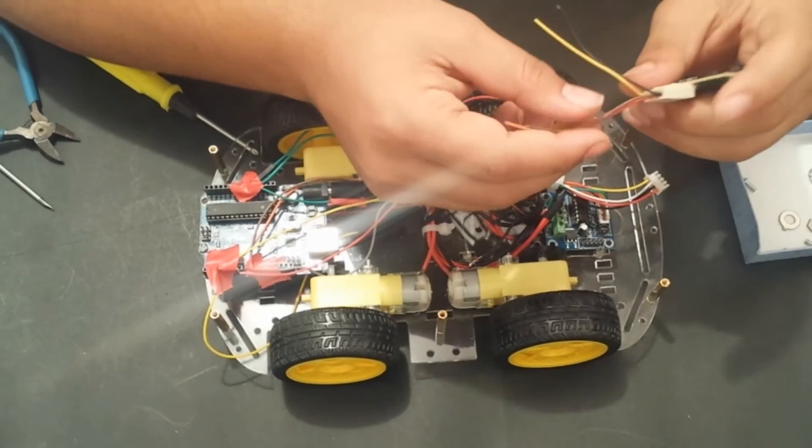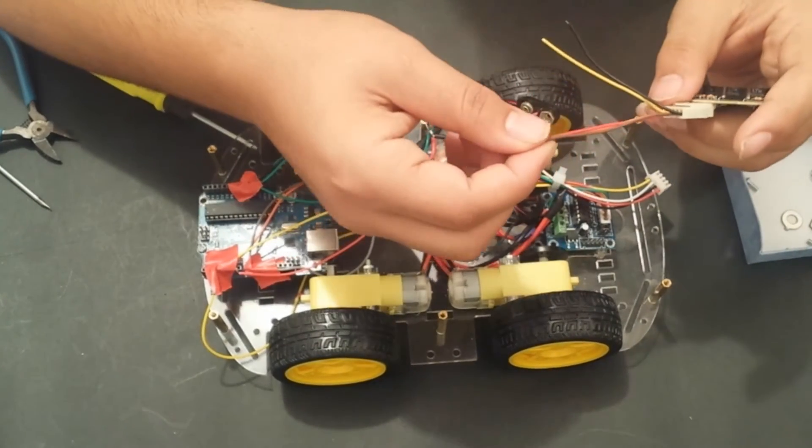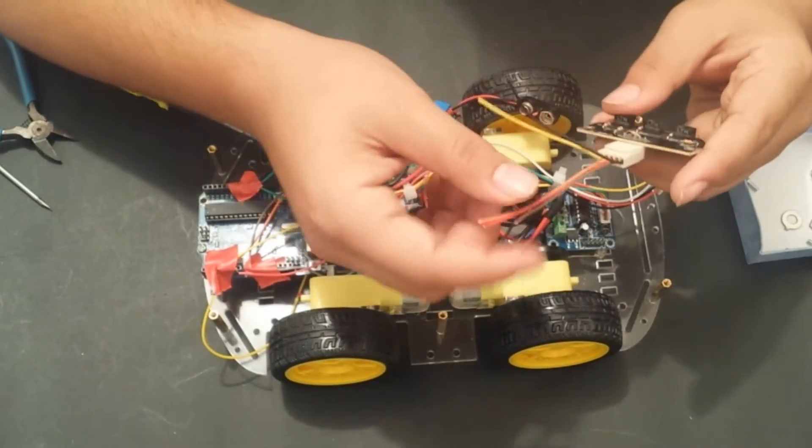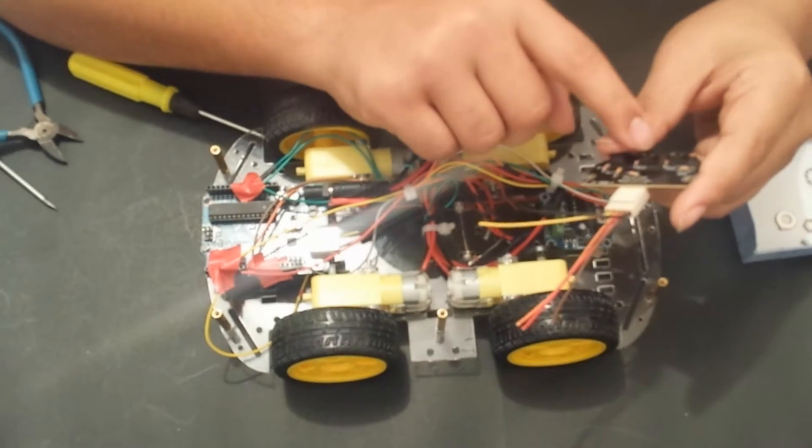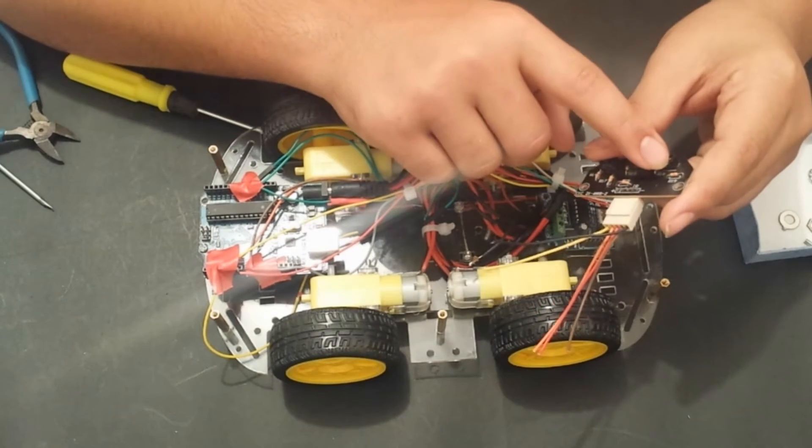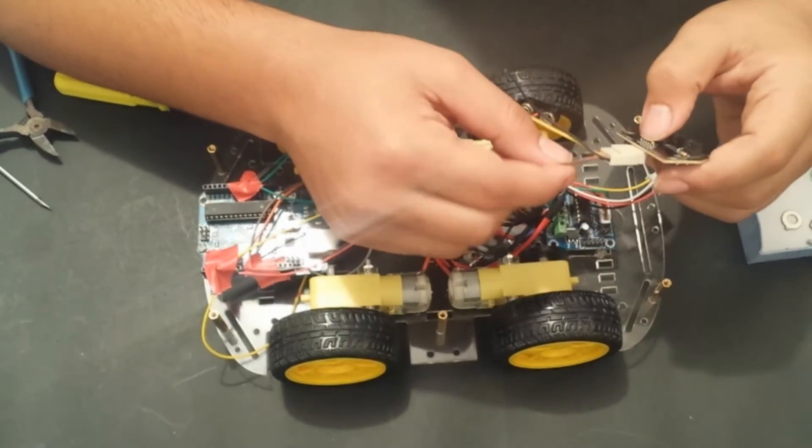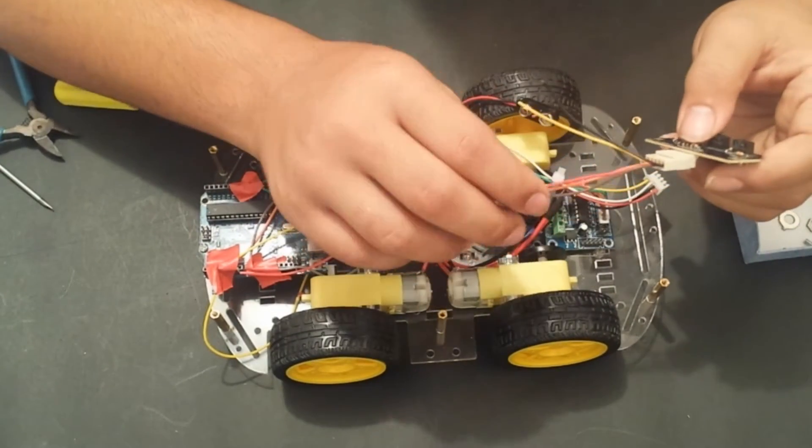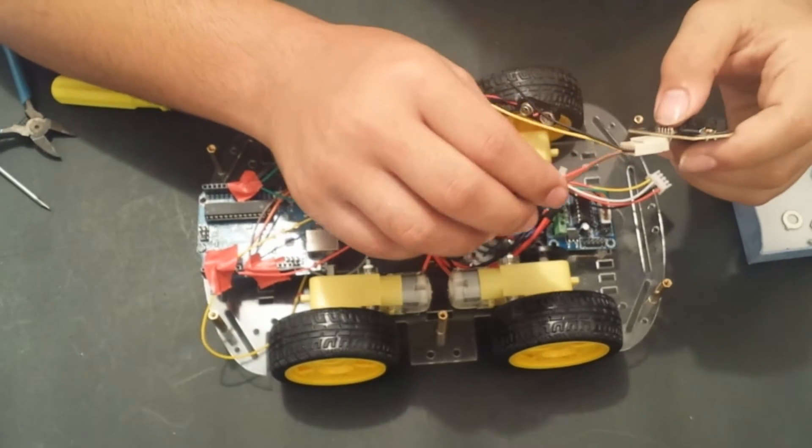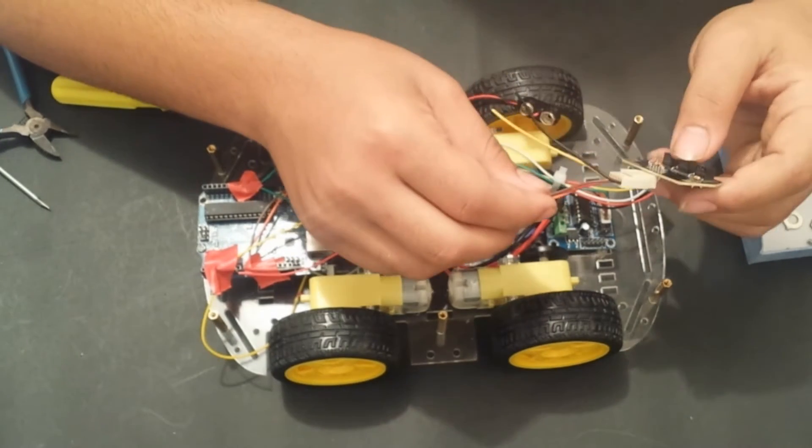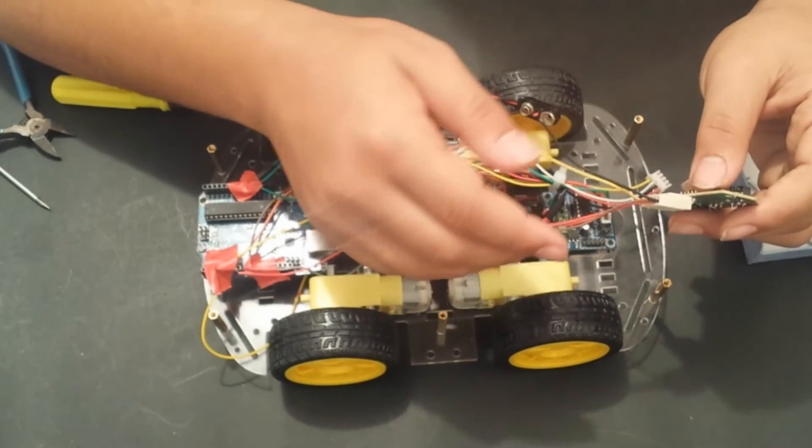And then we have these three wires. These basically give analog outputs depending on the reflection of the lights on the receivers, on the infrared receivers. So depending on how dark the line is, the values will change.